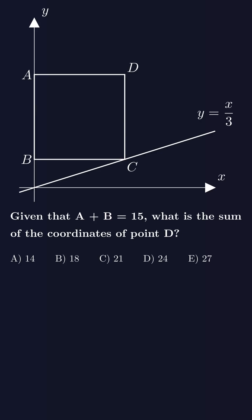Now let's call the distance between the origin and point B lowercase b. Using the line y equals x over 3, the length of side BC would be 3b. Since ABCD is a square, all the other sides must also be of length 3b.